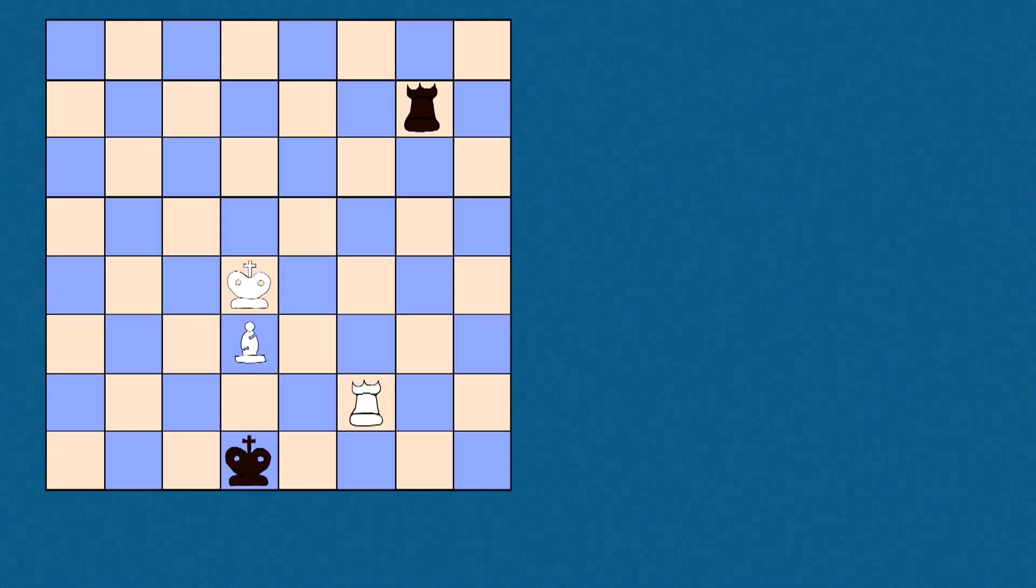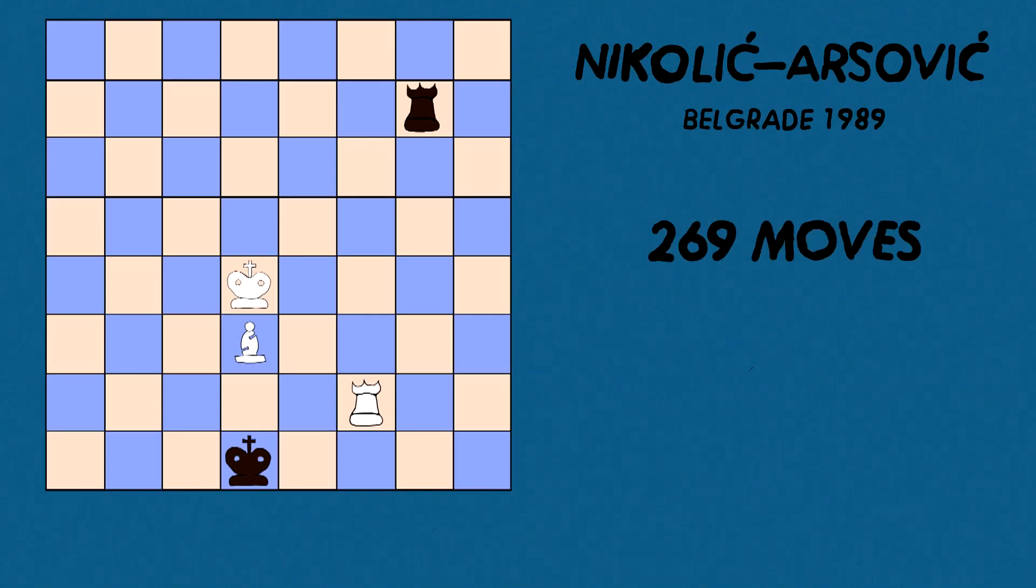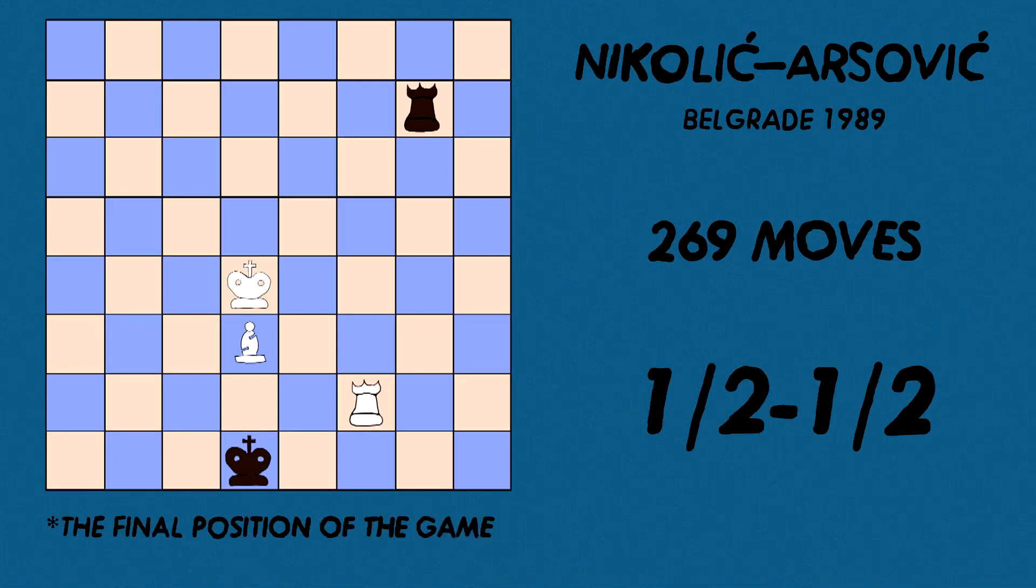The longest chess game ever played in an official tournament as of January 2020 was Nikolic vs. Arcevic, played in Belgrade in the year 1989. The game lasted 269 moves and took 20 hours and 15 minutes to complete. The game ended up being a draw.